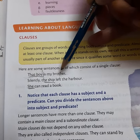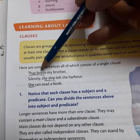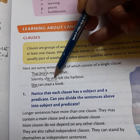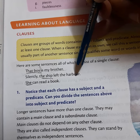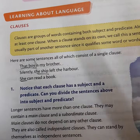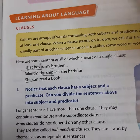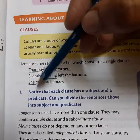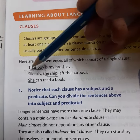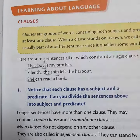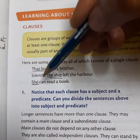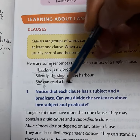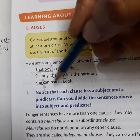Next example: 'The ship left the harbor.' The ship is the main subject here. 'Silently left the harbor' is the predicate. Next sentence: 'She can read a book.' 'She' is the main subject, and 'can read a book' is the predicate — it says something about what she can do.